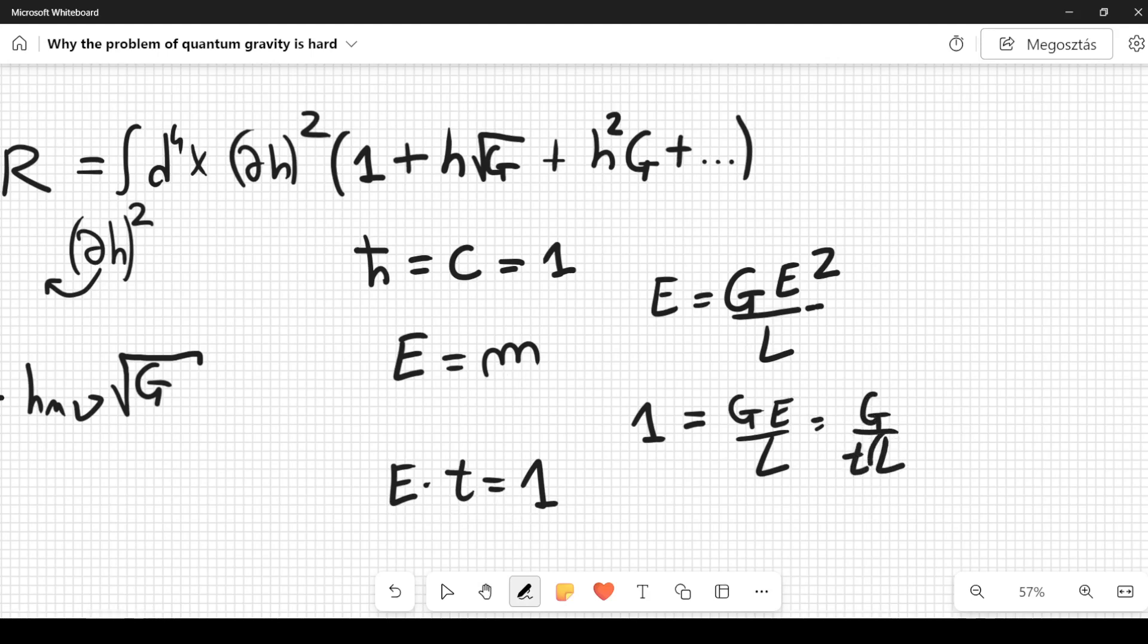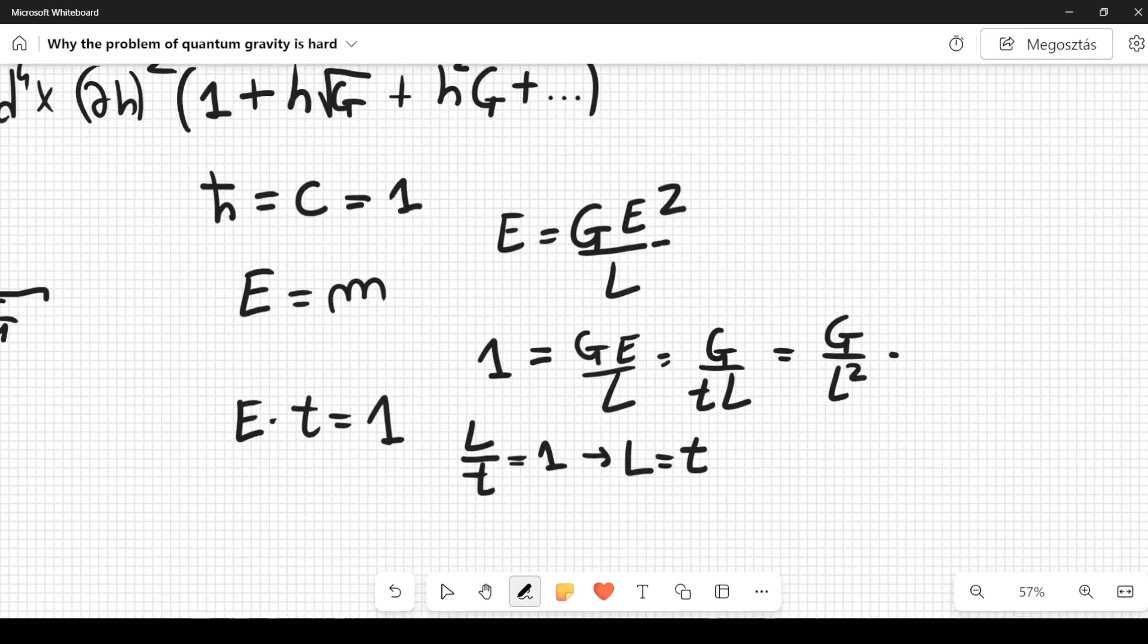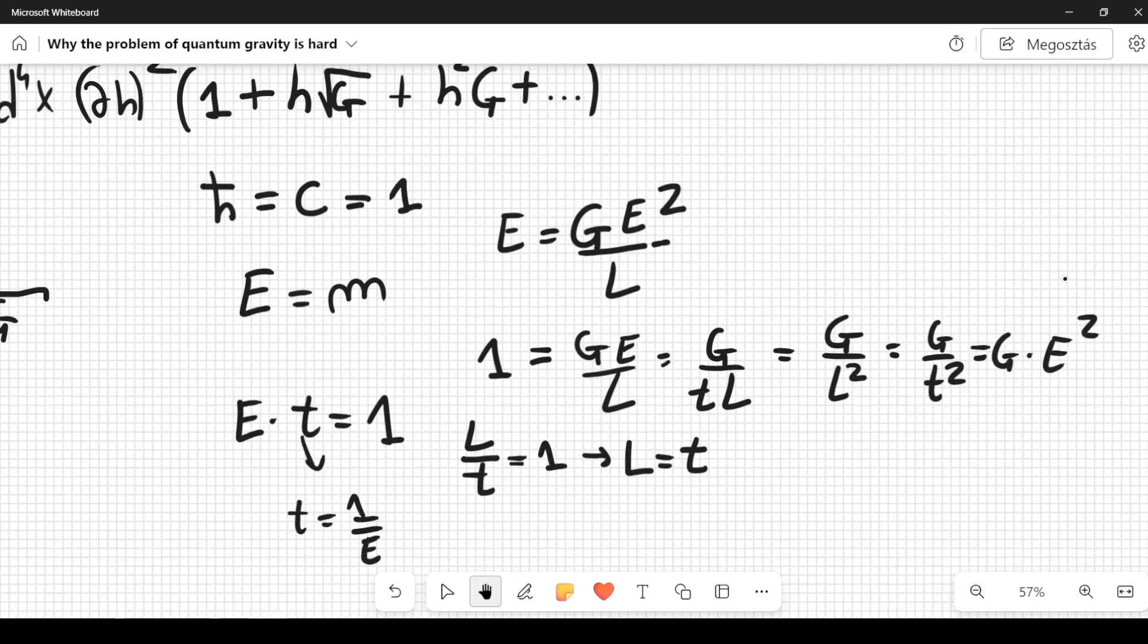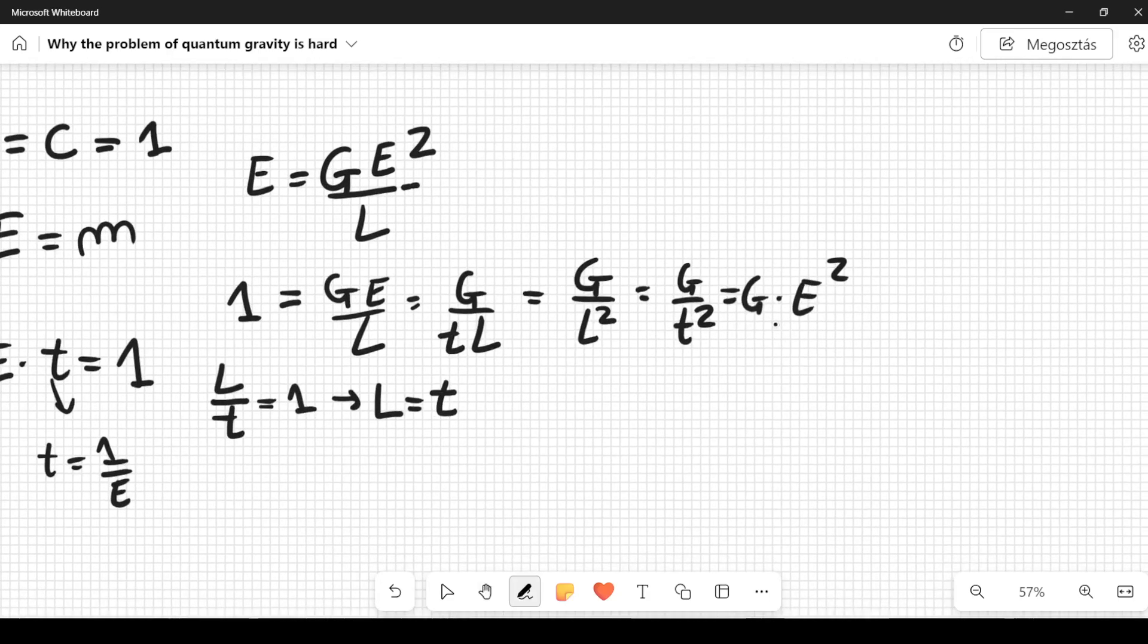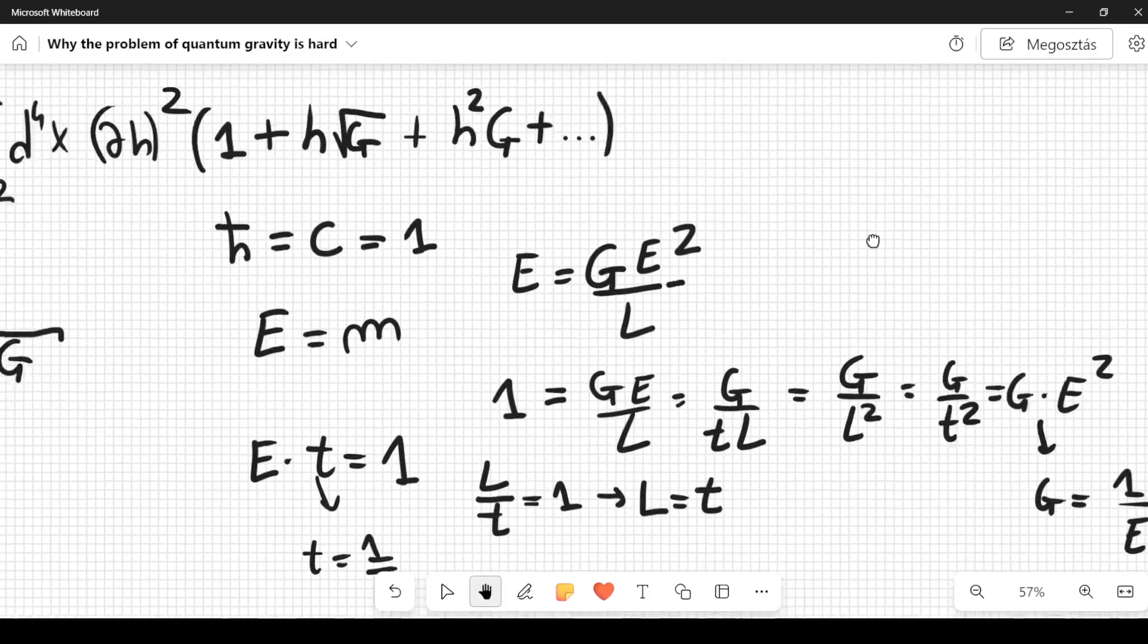so energy times time is dimensionless, and this means that this can be written as G divided by t·L, where t is time and L is space, but since the speed of light is equal to one, we have that length divided by time is dimensionless, because the speed of light is dimensionless, therefore length is the same thing as time, so we can rewrite it as G divided by L², length squared, or if you want time squared, G divided by time squared, and from here you see that time is the inverse of energy, so this is equal to G times E², simple as that, if you want, and from here you can see that G is 1 over E²,